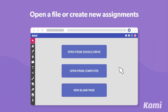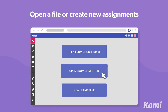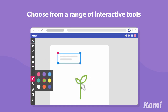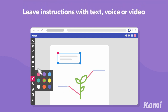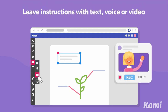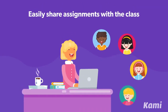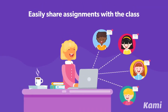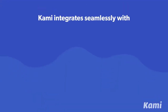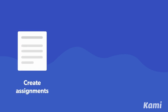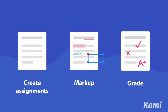To get started, open a file from Google Drive, upload one from your computer, or create a blank page. Create assignments and lessons for any subject using a variety of interactive tools. Leave instructions or video lessons to guide students through their work. Send assignments out to your students by sharing a link or through learning management systems. CAMI works seamlessly with Google Classroom, Schoology, and Canvas, where you can create assignments, markup, and grade using CAMI tools.